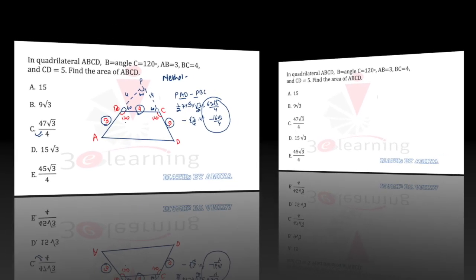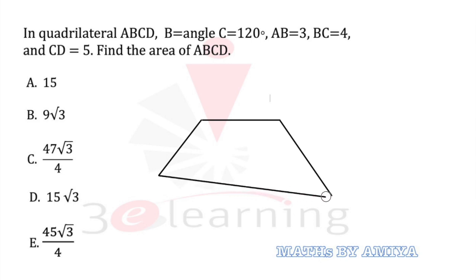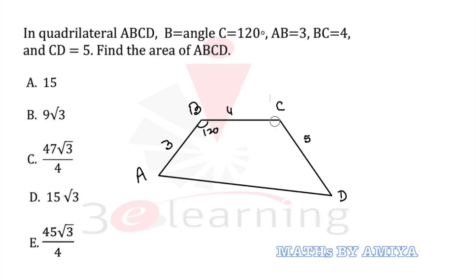Now check Method 2. In Method 2, again let's draw the diagram. We have AB, we have BC, we have CD. Let's join these two diagrams. We have A, B, C, D. This side is given as 3, this one as 4, this one as 5. This angle is 120 degrees and this angle is also 120 degrees.